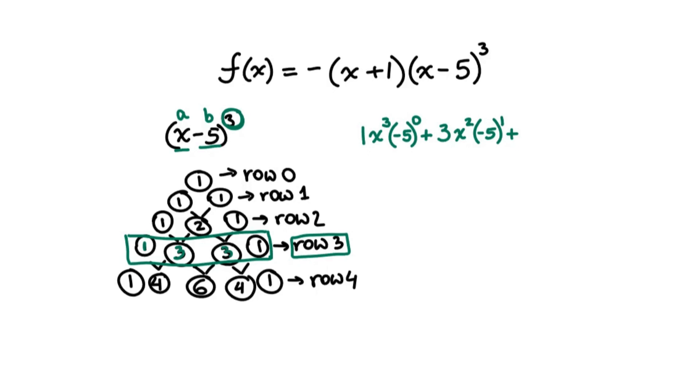Plus, next coefficient is positive 3 again. So 3x to the power of 1, we don't have to write it, but I want to emphasize it. When it's a power of 1, it's just x, right? And then times negative 5, and we're going up for this one, squared. And the last coefficient is positive 1. So plus 1 times x to the power of 0 and negative 5 cubed. Excellent. We have set it all up. Now we need to simplify.